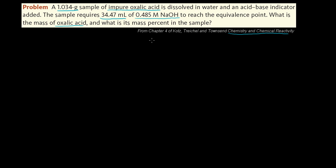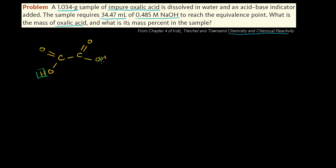Before we break into the math, let's think about what's happening. We have some oxalic acid — it's really two carboxylic acid groups joined together. It has a double bond to one oxygen and another bond to a hydroxide on each carbon. The important thing to realize is that oxalic acid can actually donate two protons — there are two protons to nab off of it.